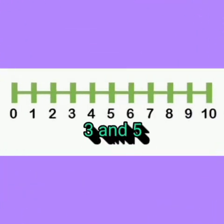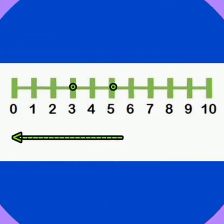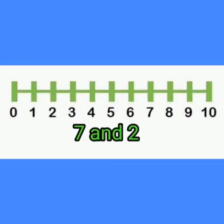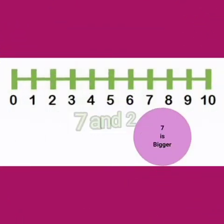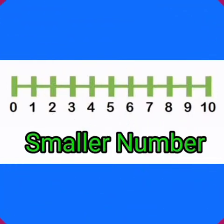For example, compare the two numbers three and five. Five is further away from zero, so the bigger number is five. Five is bigger than three. Kids, can you compare two numbers seven and two? Tell me which is bigger. Yes, seven is the bigger number.